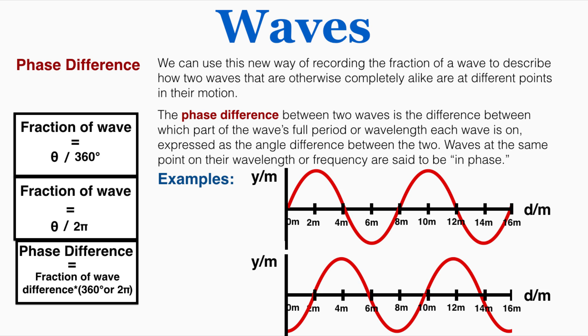So as an example, I can see that the bottom wave is exactly the same as the top wave. It's just shifted by a quarter of its length. So that means that the phase difference is going to be one quarter times 360 degrees or 2 pi. So the phase difference is equal to 90 degrees or pi over 2. So I would describe the bottom wave as having a phase difference of 90 degrees or pi over 2 from the top wave.